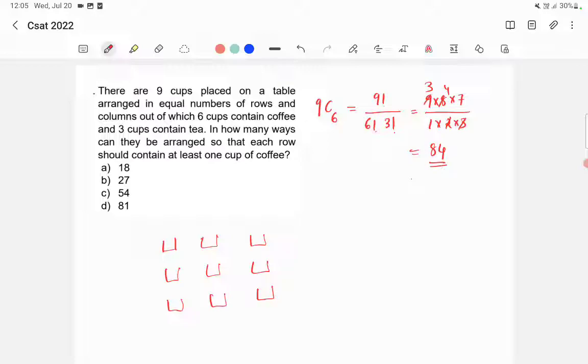But there is a condition given, right. Each row should contain at least one cup of coffee. So out of these 84 conditions we'll check how many of the conditions don't satisfy this.